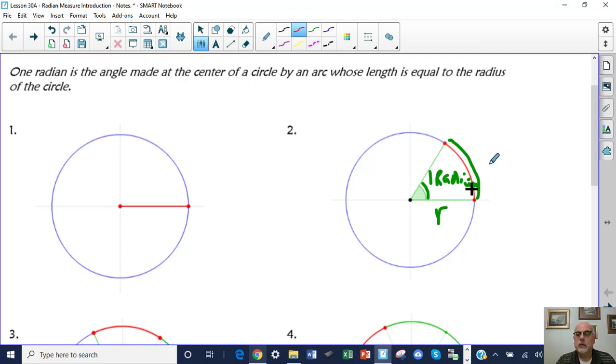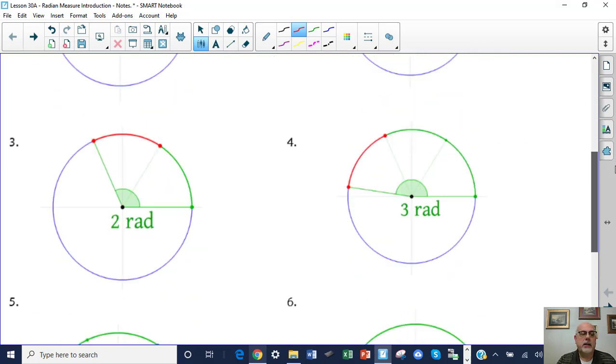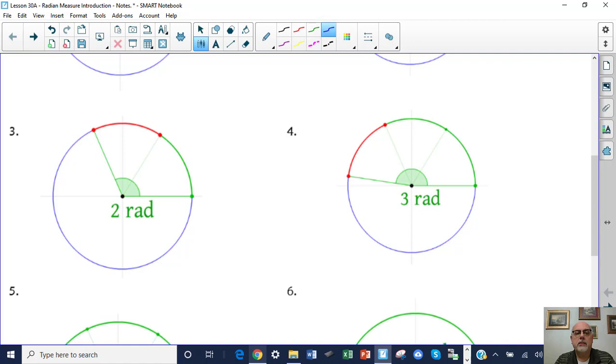Okay, so if I look down here, this angle right here will measure two radians because I'm cutting off one, two lengths of the radius. All right, number four, it's three radians.